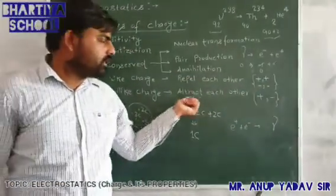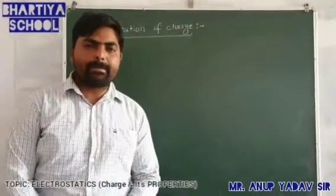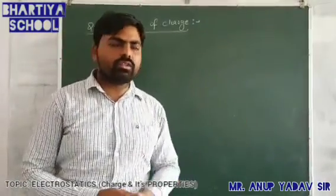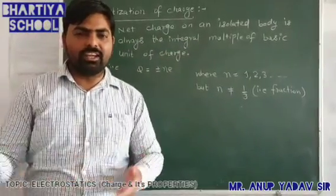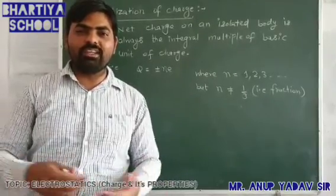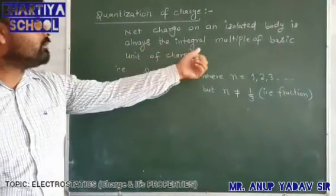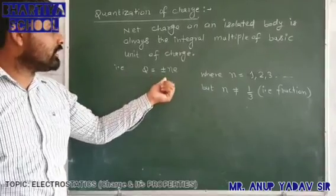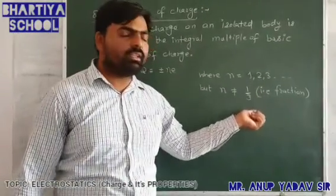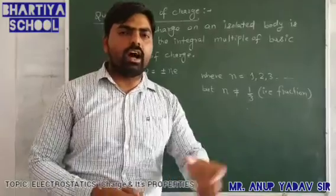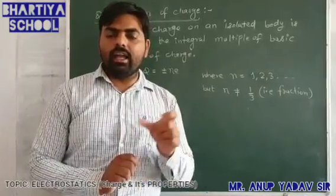Let's discuss quantization of charge more deeply. An isolated body's net charge is always an integral multiple of the basic unit of charge, so Q = ±ne, where n can be 1, 2, 3, ... up to any integer value. However, n cannot be a fraction — for example, one-half or one-third — since we cannot have half an electron. The elementary charge on an electron is the lowest possible value of charge.